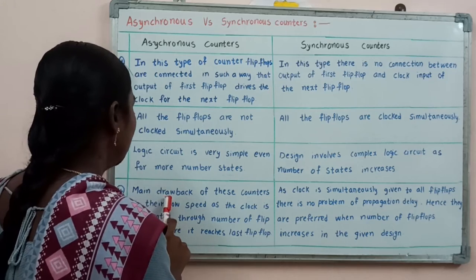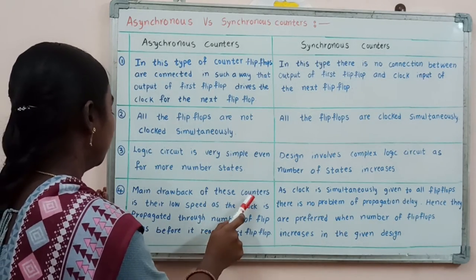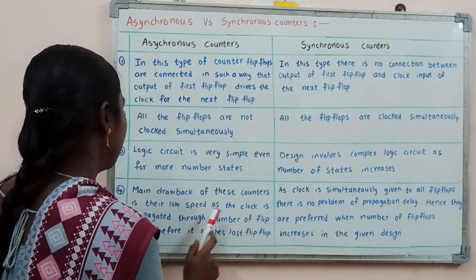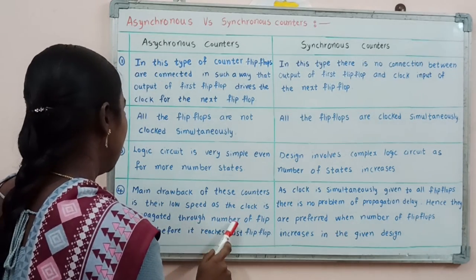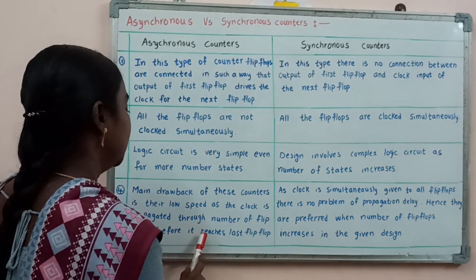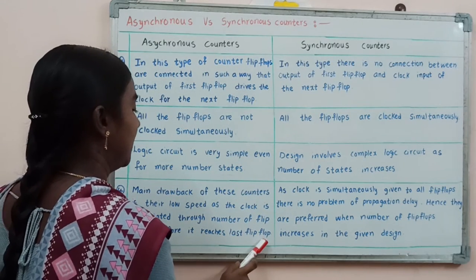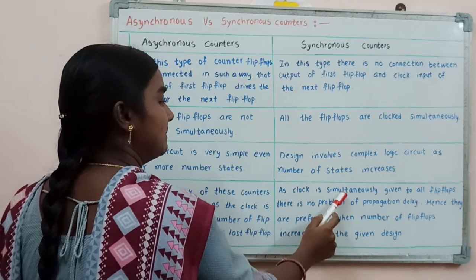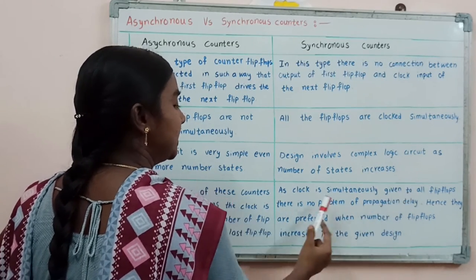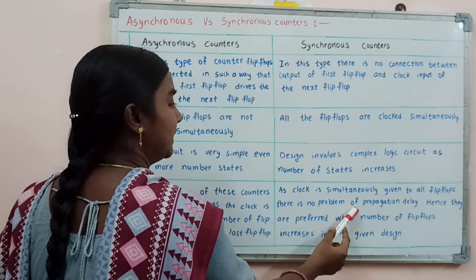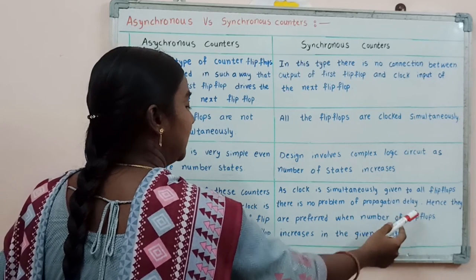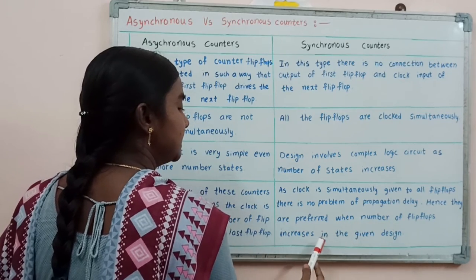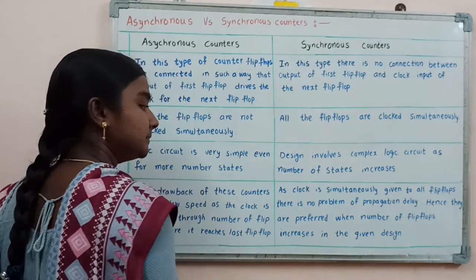Coming to the fourth point: the main drawback of Asynchronous Counters is low speed, as the clock is propagated through the number of flip-flops before it reaches the last flip-flop. In Synchronous Counters, since the clock is simultaneously given to all flip-flops, there is no problem of propagation delay. Hence, they are preferred when the number of flip-flops increases in the given design.